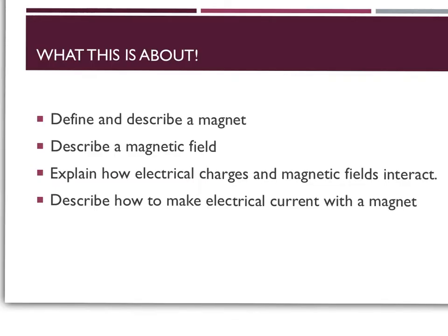You might be wondering what this is all about — how are electricity and magnets related? That's what we're going to explore. During this PowerPoint we'll cover four things: we'll define and describe what a magnet is and what a magnetic field is, we'll explain how electricity and magnetic fields interact, and we'll talk about how to make electrical current when you have a magnet.